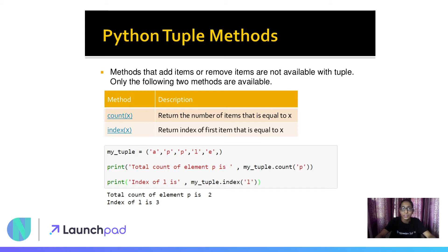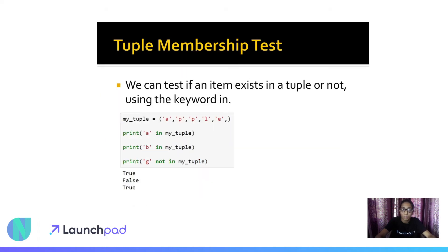Similar to strings, tuples also have methods. The methods available with tuples are 'count' and 'index'. The 'count' method returns the number of items equal to x, and the 'index' method returns the index of the first item that is equal to x.